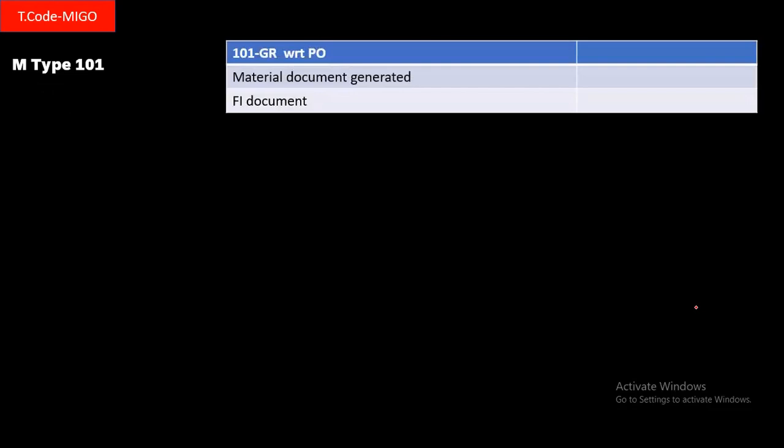The transaction to receive material is MIGO. Movement type 101 is simple and straightforward — a one-step process. Once we receive the material, we do GR in MIGO with reference to the purchase order, so inventory gets updated, a material document is generated, and an FI accounting document is also generated.